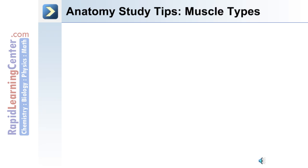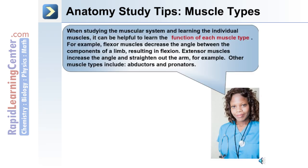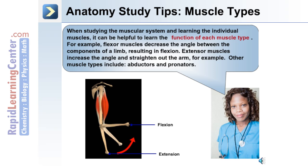A tip to help with all the different muscles you need to learn in anatomy is understanding muscle types. When studying the muscular system, it can be helpful to learn the function of each muscle type. For example, a flexor muscle decreases the angle between the components of a limb, resulting in flexion, whereas an extensor muscle increases the angle and straightens out the arm. Other muscle types include abductors and pronators.